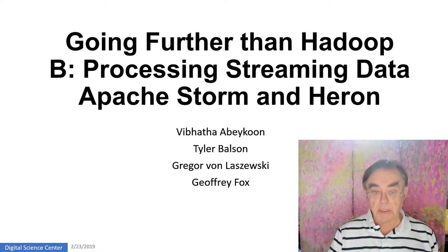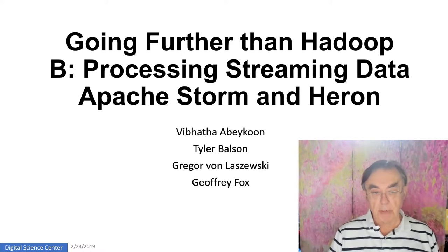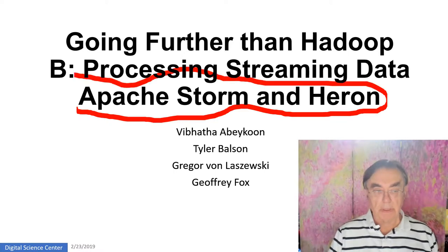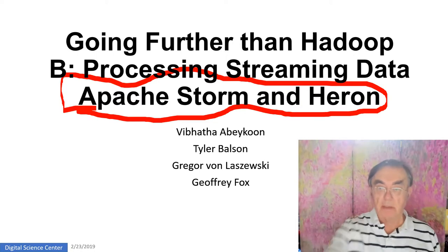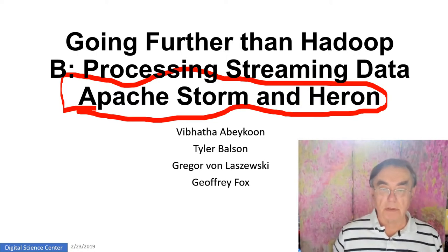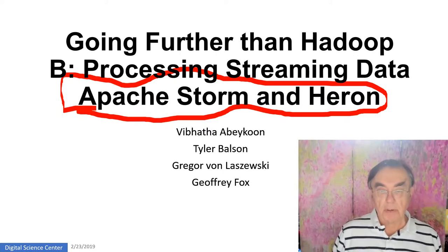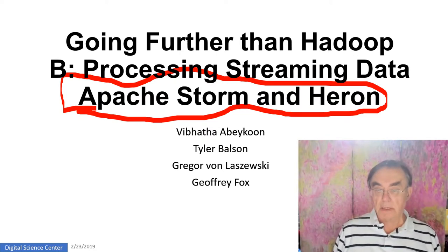Hello everybody. This is the second part of our Going Further in the Hadoop presentation. In this part we tell you how to use Apache Storm and Heron. These are the big data software systems which allow you to do streaming data — flowing data — all your teddy bears sending their remarks back to the cloud, or your cars asking how to get from A to B, or your smartphones asking cosmic questions.